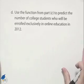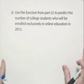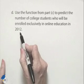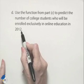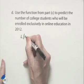Now use the function from Part C to predict the number of college students who will be enrolled exclusively in online education in the year 2012. 2012 will be 10 years past the year 2002, so therefore we're finding L of 10.